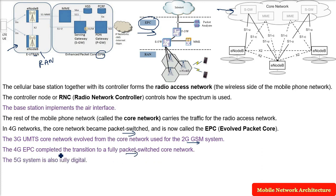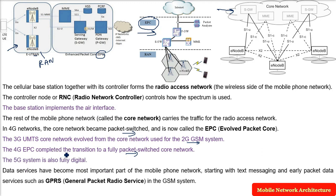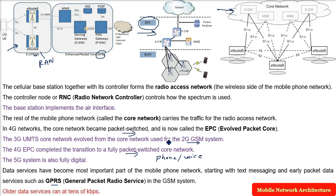5G is fully digital. Data services are now the most important part of the phone network. When 1G came, it was all about voice — no one thought data would come. Earlier we used GPRS in GSM systems. Previously we talked about kbps speeds; now we are talking about gbps — gigabit per second. Kilo is 10³; the difference is enormous.